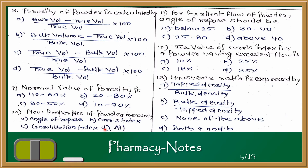Question 11: For excellent flow of powder, the angle of repose should be? We have learned that below 25° is excellent flow, 25–30° is good, 30–40° is possible, and above 40° is poor. So for excellent flow the angle of repose should be less than 25°. The answer is A.